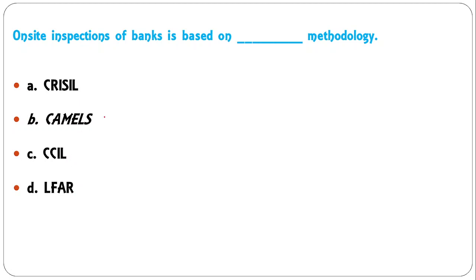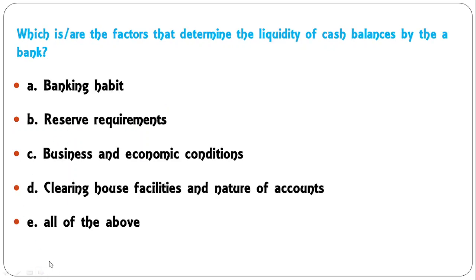On-site inspections of banks is based on which methodology: DAS, CAMELS, CCIL, or LFAR? The correct answer is CAMELS, which stands for Capital Adequacy, Asset Quality, Management, Earnings, Liquidity, and Bank Sensitivity. So B is the correct answer.